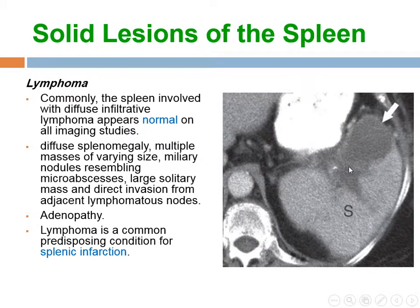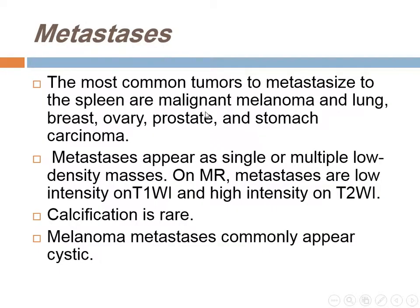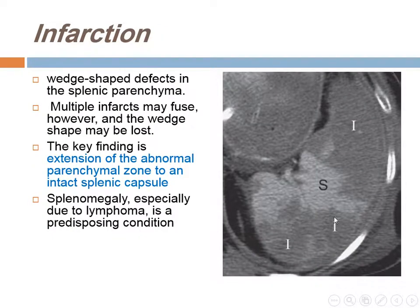Solid lesions of the spleen: lymphoma — the spleen is commonly involved by lymphoma and mostly imaging appears normal. Sometimes there is diffuse enlargement, single mass, multiple masses, or micro abscesses, and adenopathy in the abdomen. Lymphoma is a common predisposing condition for splenic infarction. Metastasis: the most common tumors metastasizing to the spleen are malignant melanoma, lung, and ovary. They appear as single or multiple low-density masses, low in T1 and high in T2 on MRI, with rare calcification. The key finding for splenic infarction is extension of the abnormal parenchymal zone to the intact splenic capsule.